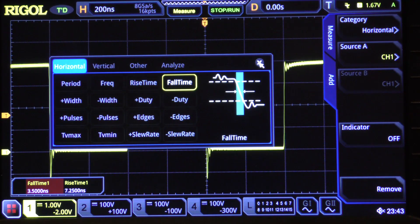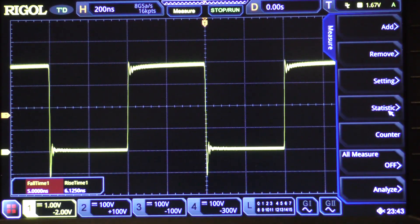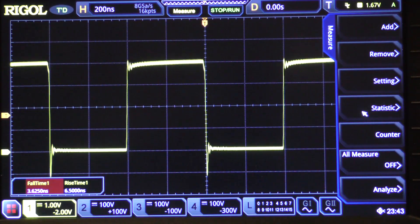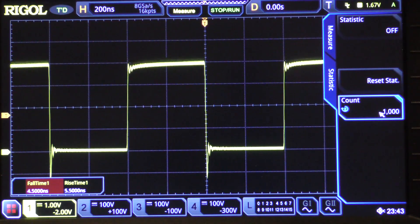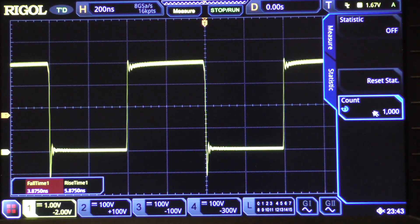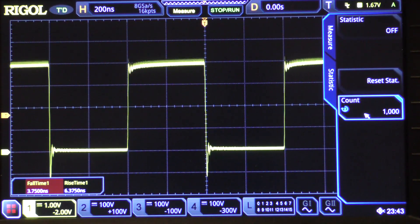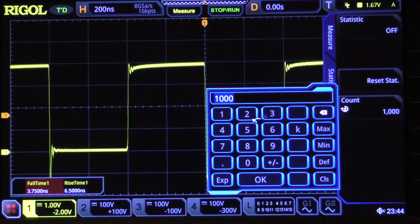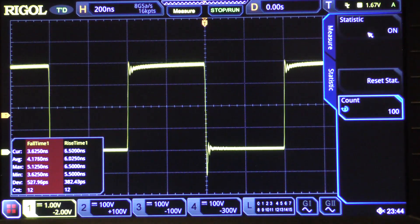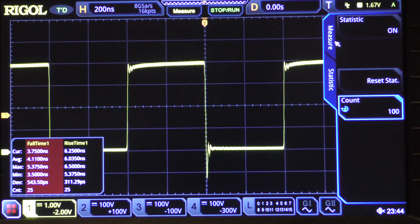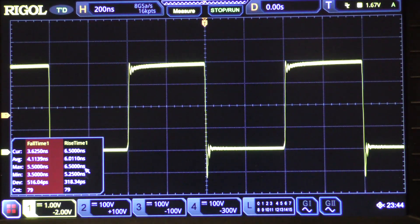You may notice down here in the lower left hand corner we now have a couple of boxes for fall time and rise time. Going back to the measure menu, you'll see a box here called statistic, so we're going to click on that. It's going to ask us for a count. It's generally a good idea to gather a thousand or more samples. I'm going to only do a hundred this time just to keep the video shorter. Then we're going to turn the statistics on and hit reset statistics.